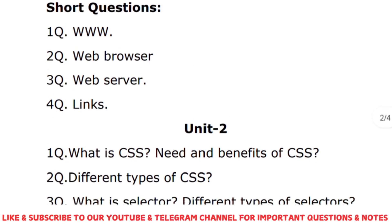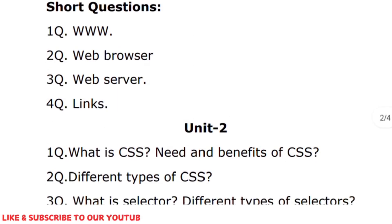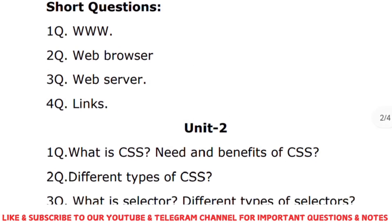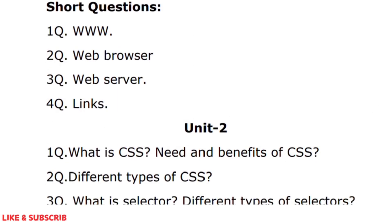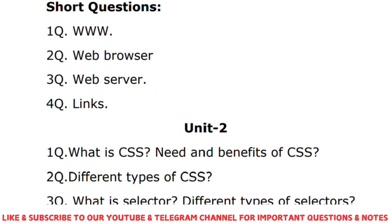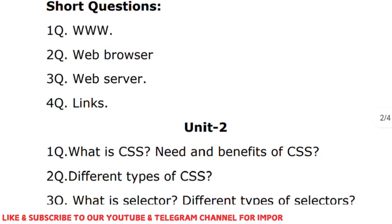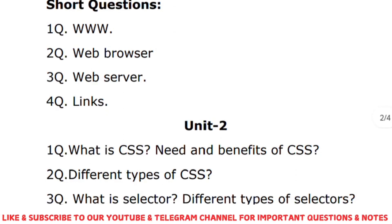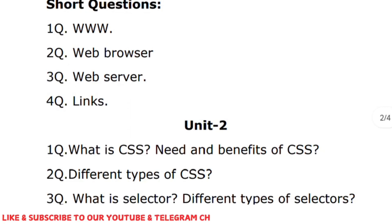Different types of CSS: CSS has three types — internal CSS, external CSS, and inline CSS. All three topics need to be explained along with examples.